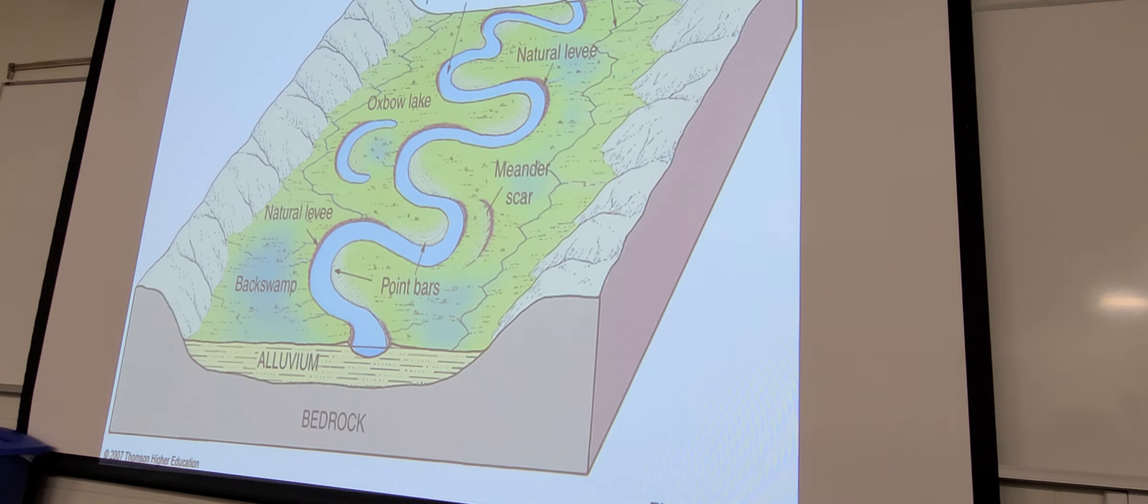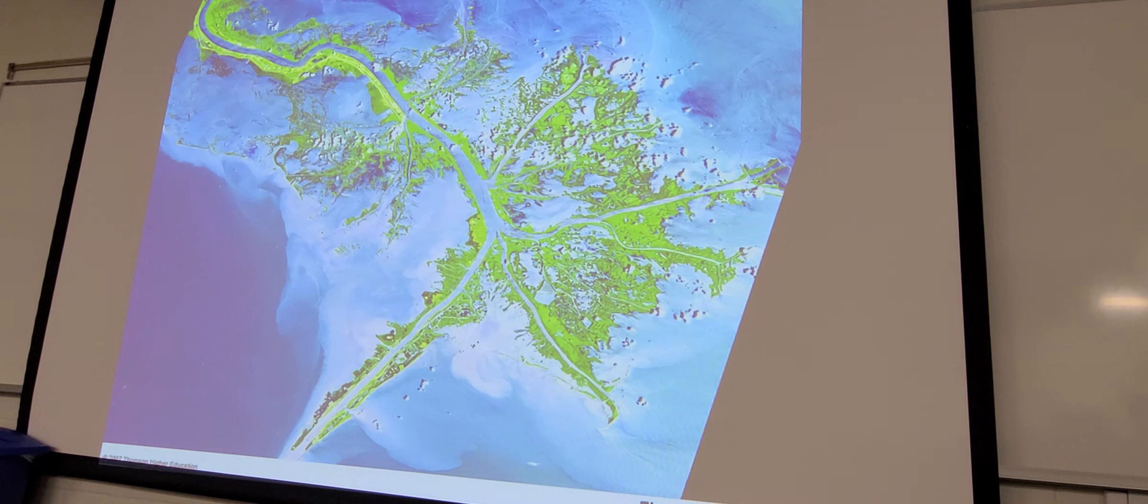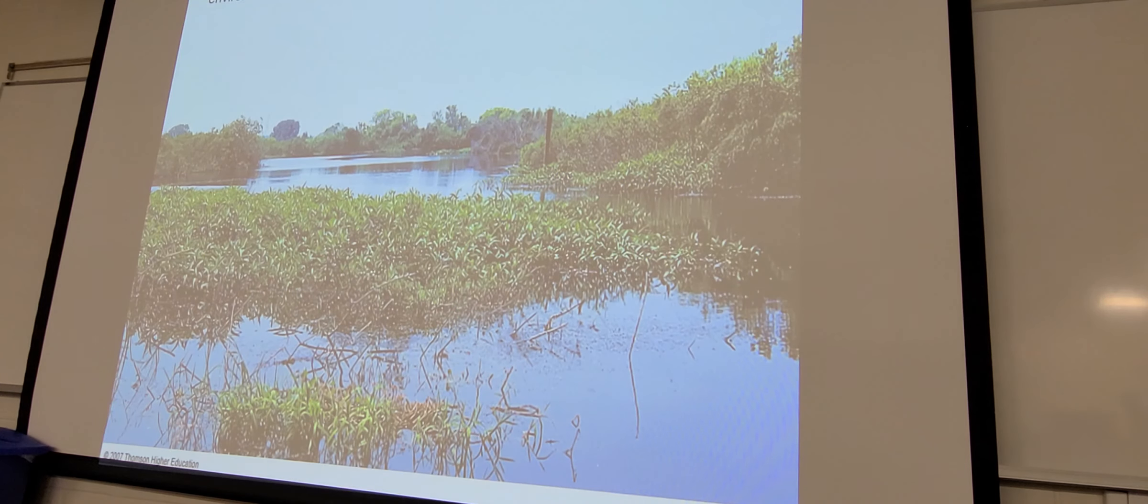So this example here of an oxbow lake - this was a meander that cut itself off. You could see meander scar there, different kind of land formations that we'll see near the many major rivers that we have here. And then at bottom, I showed you how the stream, the Mississippi, was carrying all that material. It dumps it all out. Rivers dump that material all out on deltas. This is the Mississippi delta where all that material goes out from Minnesota.